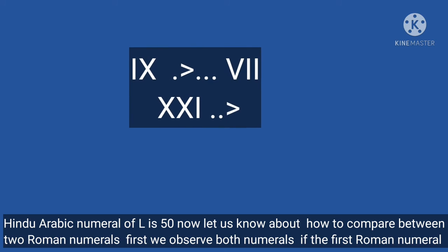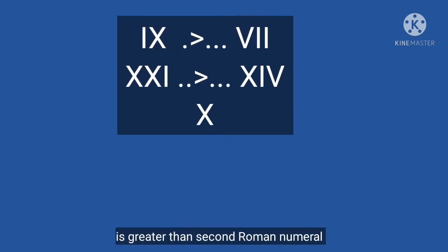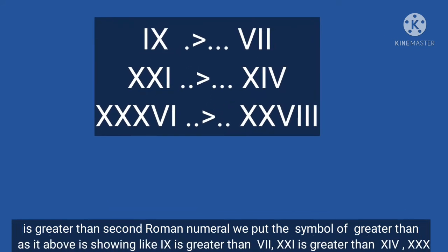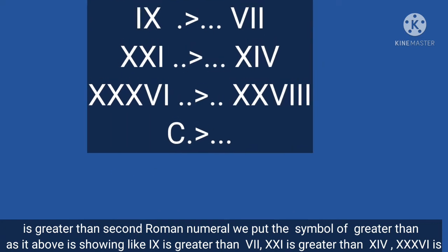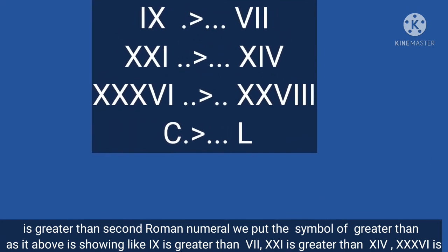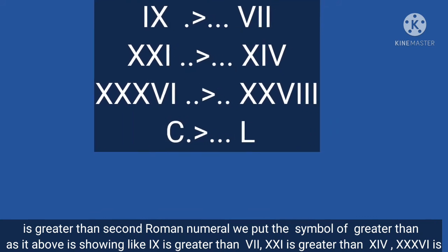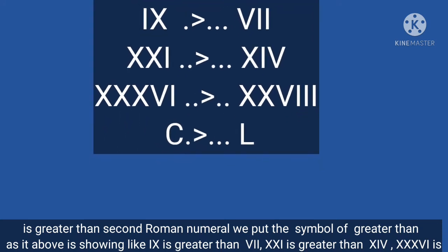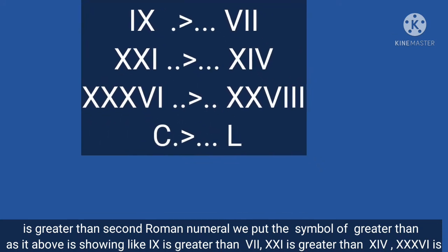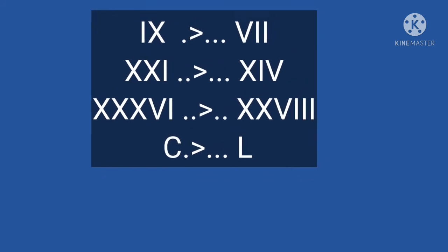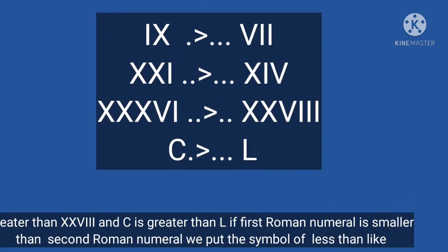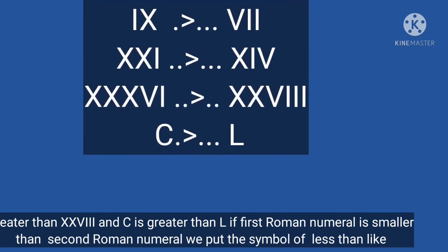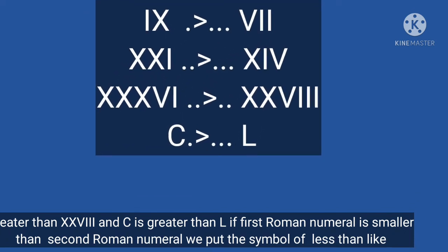Now let us know about how to compare between two Roman numerals. First we observe both numerals. If the first Roman numeral is greater than the second, we put the greater than symbol. For example: IX means 9 is greater than VII means 7; XXI means 21 is greater than XIV means 14; XXXVI means 36 is greater than XXVIII means 28; and C is greater than L.